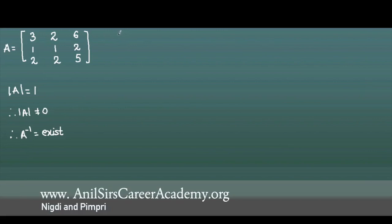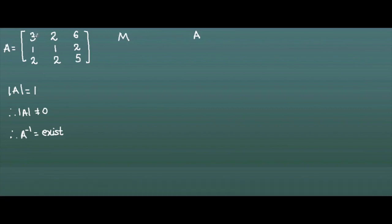The adjoint method involves first finding minors, then finding cofactors. Minors are denoted by capital M and cofactors are denoted by capital A. Since we have a 3×3 matrix with nine elements, we will have nine minors and nine cofactors. Labeling follows rows and columns: M11 means first row first column, M12 is first row second column, M13 first row third column, and so on through M33.